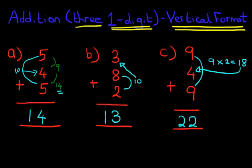So, the vertical format is no different to the horizontal format when you are adding three one-digit numbers. Look for a pattern. If there isn't one, then simply just add the numbers one by one.